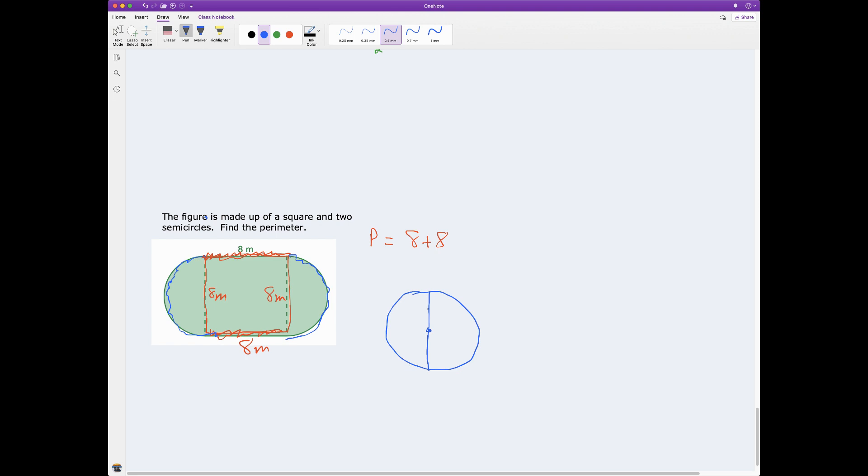And what is the diameter of this circle? Well, if I look at one of the semicircles, to get from one side of the semicircle to the other, I travel 8 meters. So my diameter equals 8 meters.